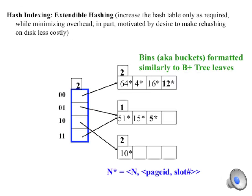This slide shows the hash table on the left, highlighted in blue. The bins or buckets to the right are formatted much like B-plus tree leaves. Each bin contains search keys together with associated information indicated by asterisks. Just as the roots of a B-plus tree are typically stored in main memory, while the rest of the nodes are stored on disk,